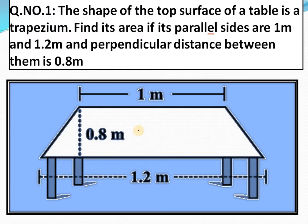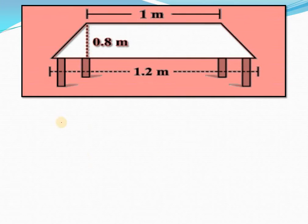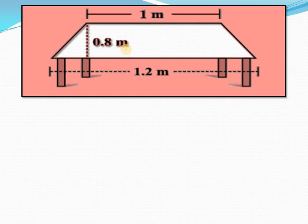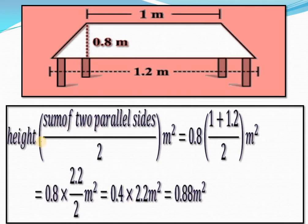इस table top का area निकालना है। Given क्या है: this side and this side both are parallel. This side is 1 meter and this side is 1.2 meter and height of this shape is 0.8 meter. तो हम पहले area का formula लिखते हैं। Formula है: height × (sum of two parallel sides) / 2 square meters.